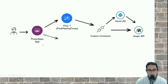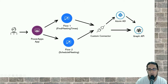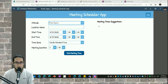The Power Apps application is also going to execute a second flow to schedule meetings. This flow will use a custom connector that connects to the Graph API with the corresponding application or delegated permissions.